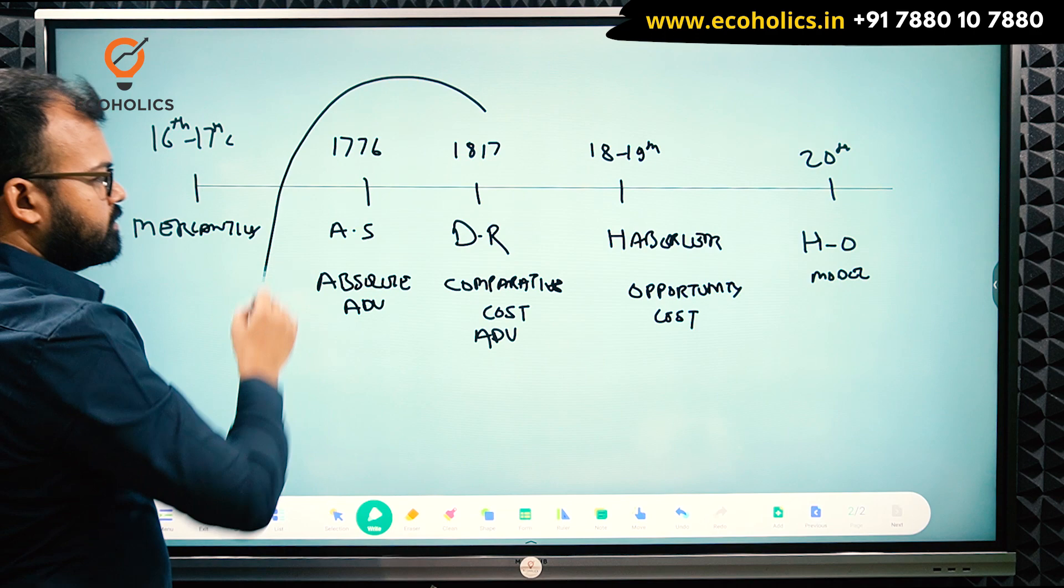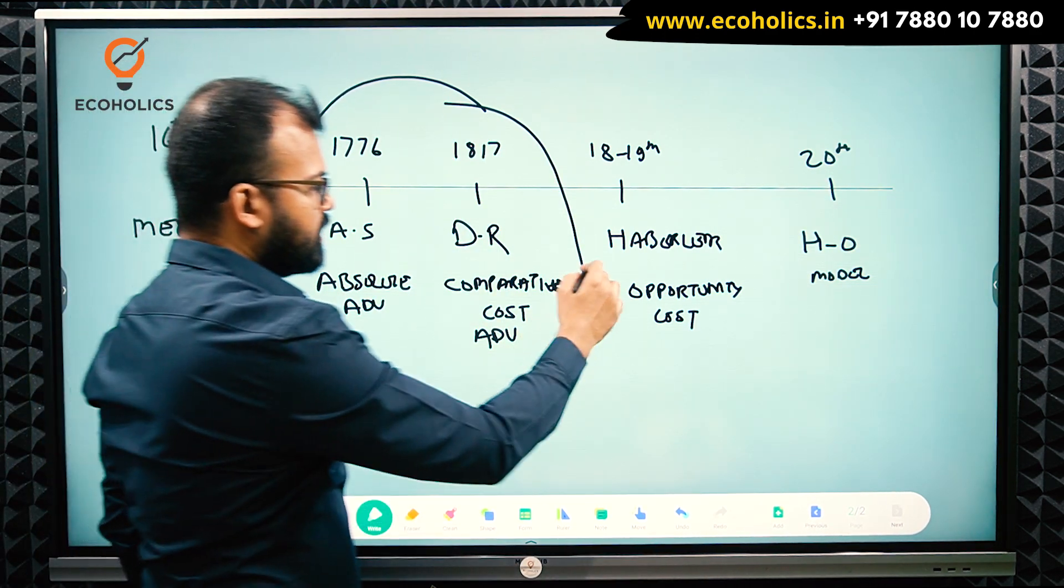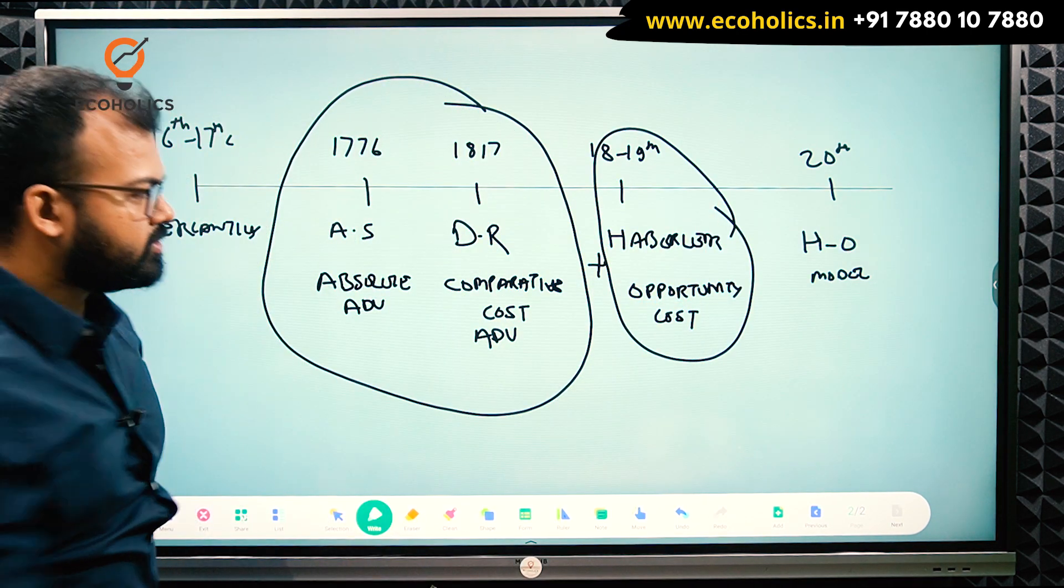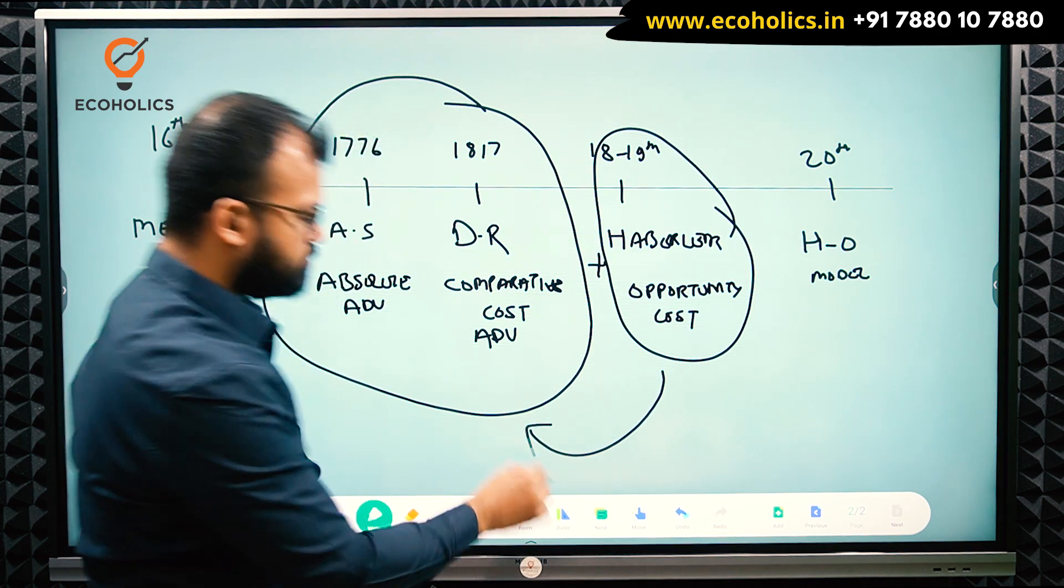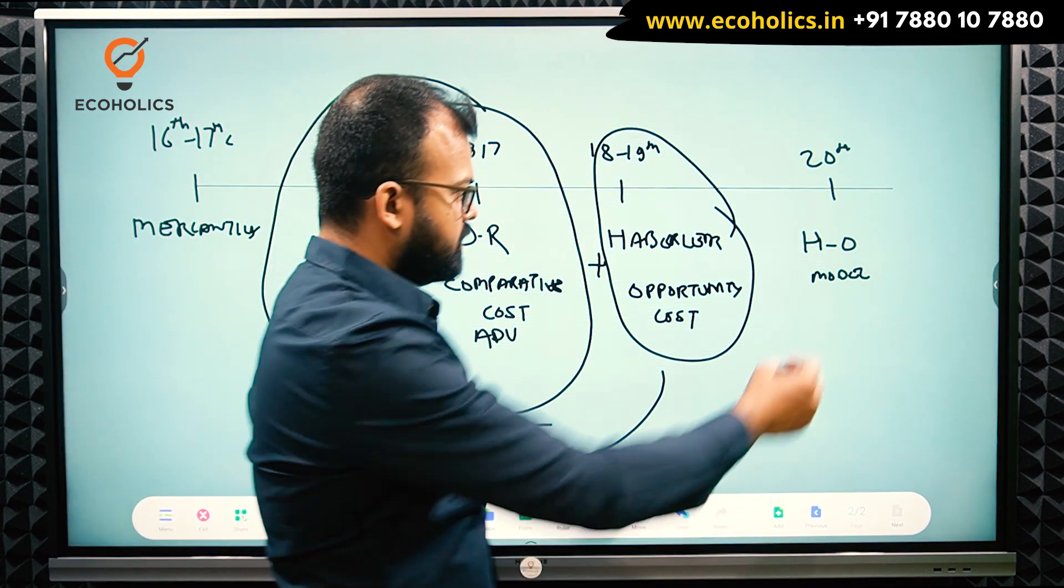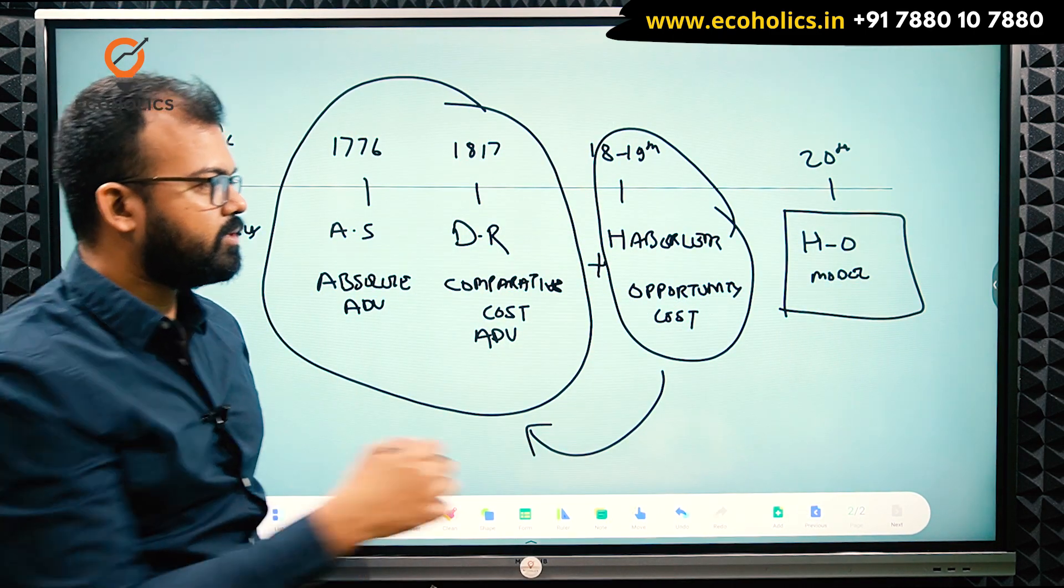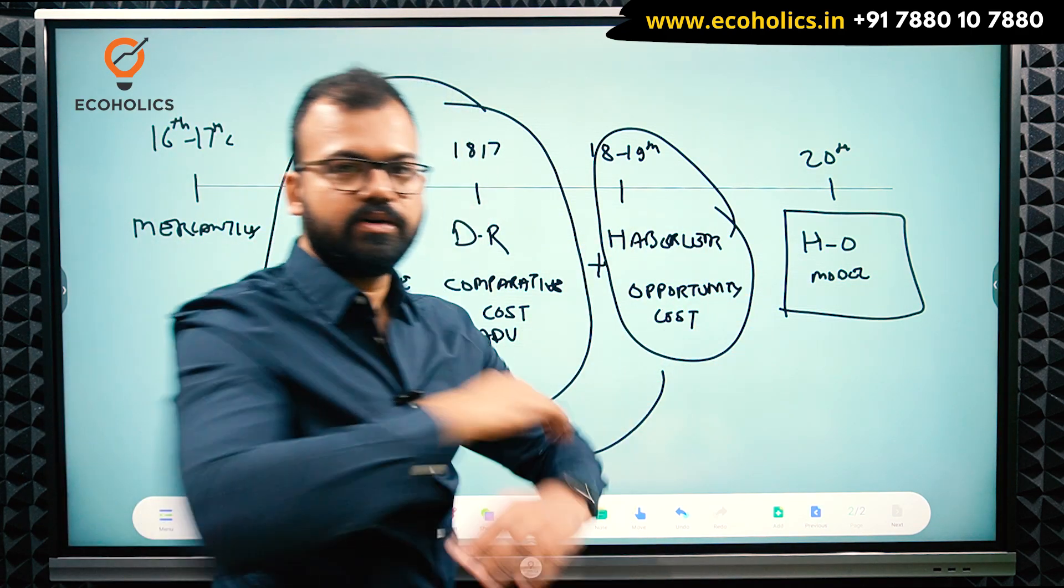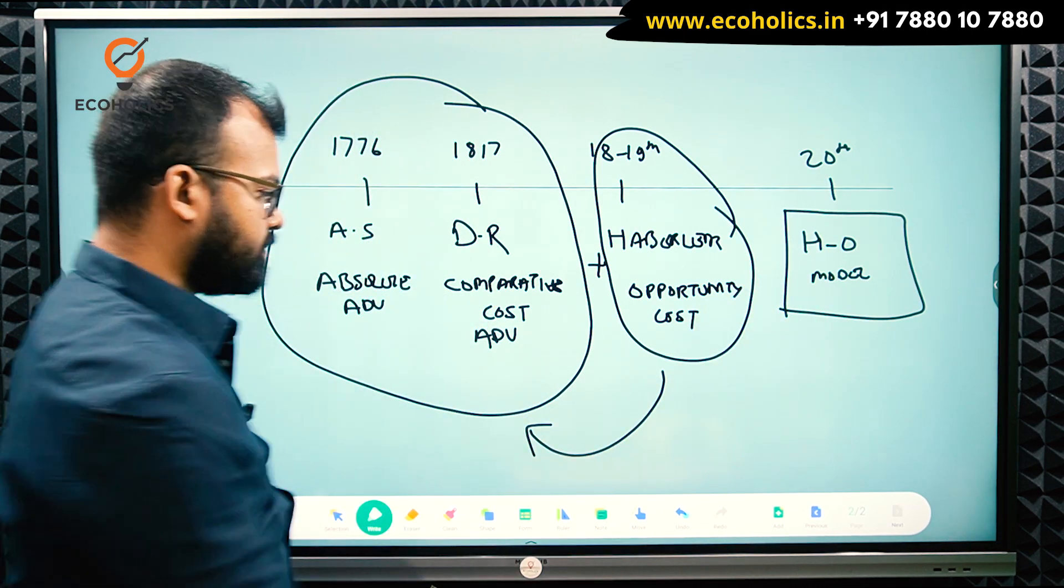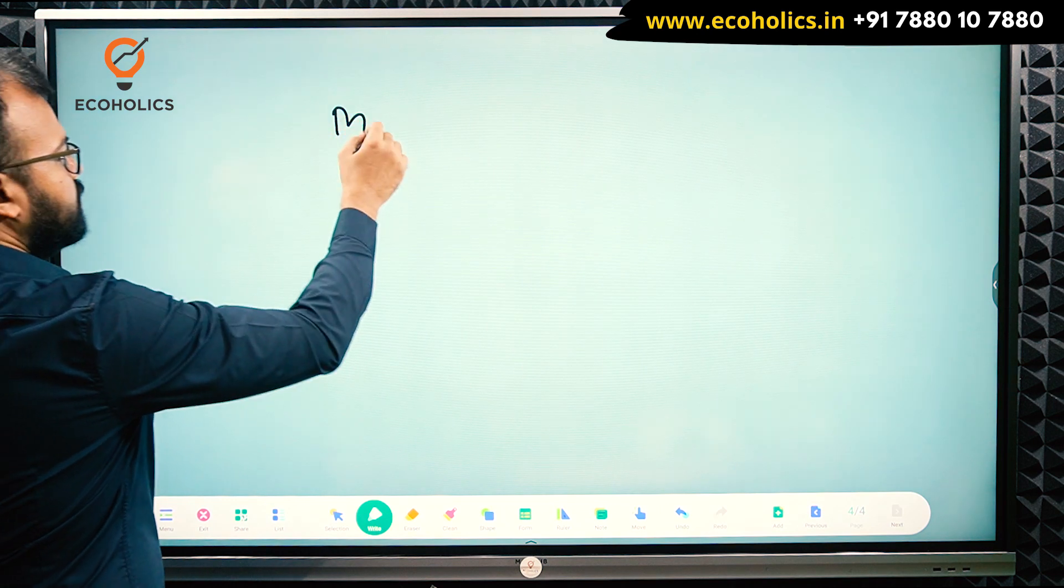Now if you compare, this is generally considered the classical theory. Although classical theory also includes Haberler's opportunity cost theory, which was based on these two earlier models given by Adam Smith and Ricardo, Heckscher-Ohlin made a significant improvement in the theory. That's why it is called the modern theory. Now we move forward to understand why it is called modern.